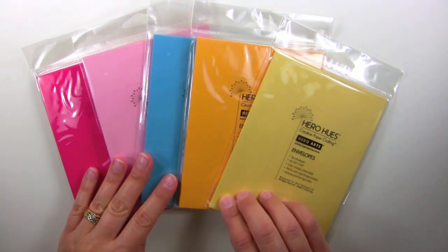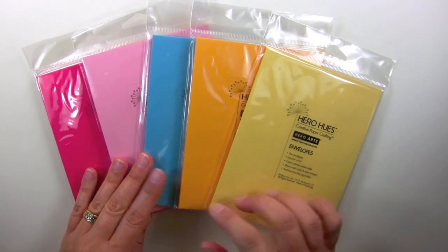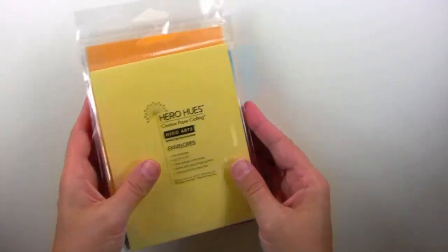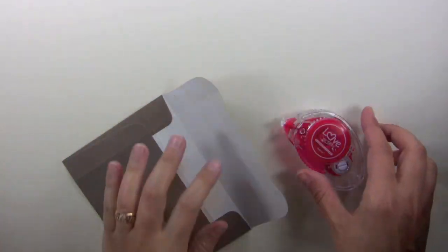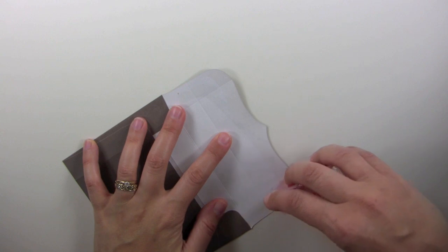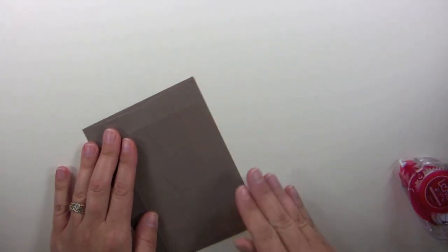Today we're going to be using these envelopes from Hero Arts from the Hero Hues line. They come in all different, really pretty colors. These are so nice to use for this technique. The first step is to go ahead and seal the flap of your envelope. I like to use a dry adhesive for this, but you could also use a glue stick.